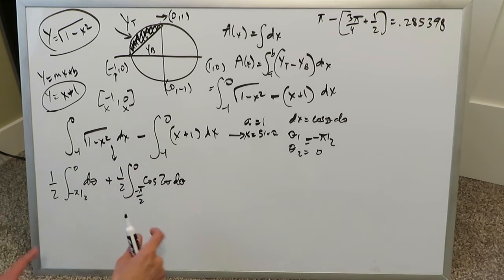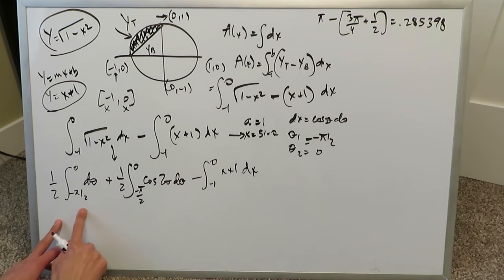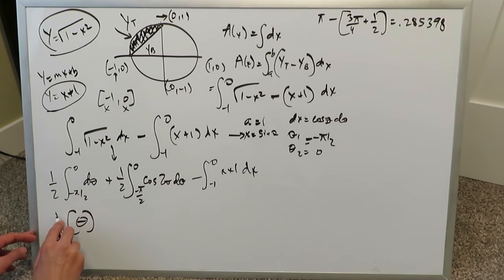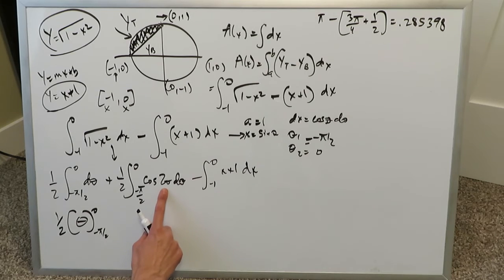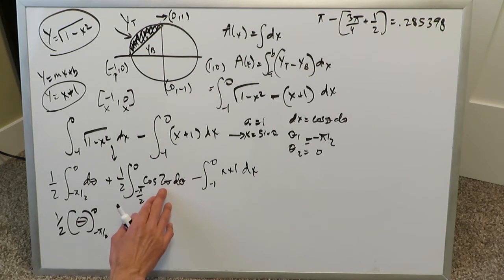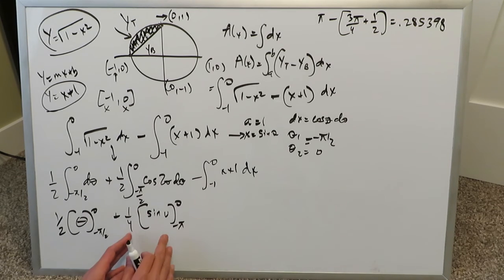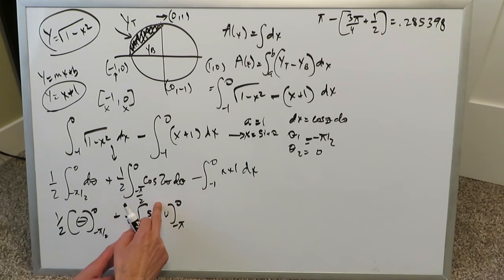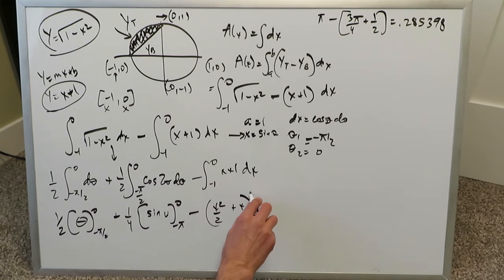So all of that gives us those two integrals, and we still have the remaining part: the integral from minus 1 to 0 of (x plus 1) dx. For the cosine 2 theta integral, using polynomial substitution with u equals 2 theta, du equals 2 d theta, so d theta equals du over 2, which gives a factor of one quarter. The integral of cosine u gives sine u, and the intervals become minus pi to 0. For the (x plus 1) integral, it's basic polynomial integration: x becomes x squared over 2, and 1 becomes x, evaluated from minus 1 to 0.